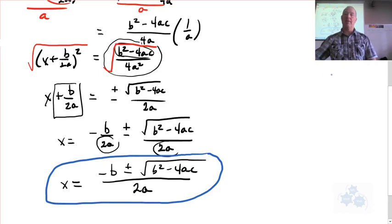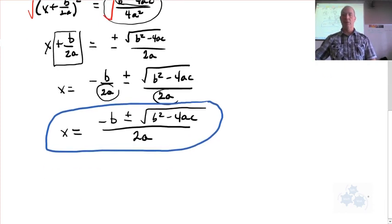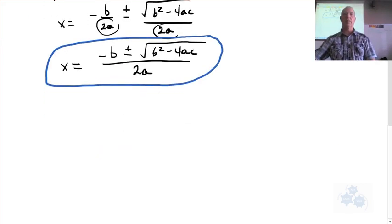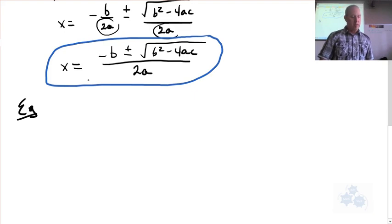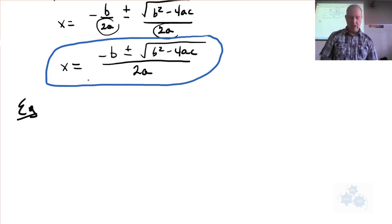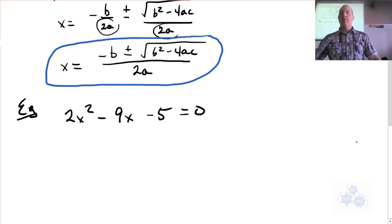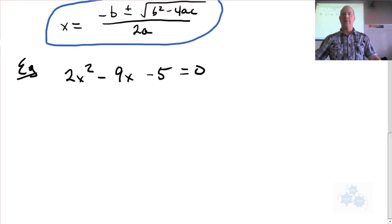Let's do some examples. Let's do something simple — something we've done before. So: 2x squared minus 9x minus 5 equals 0. Write this down, and we're going to have the quadratic formula ready to use. We want to find the roots, find the solutions — we want to find what x equals.